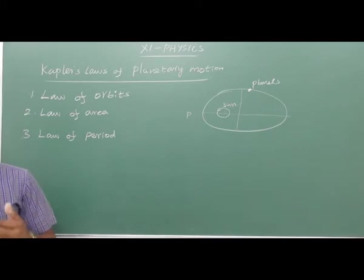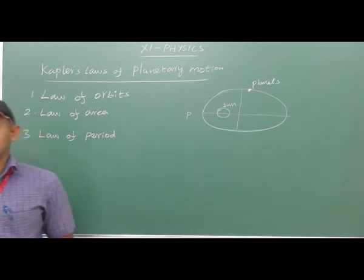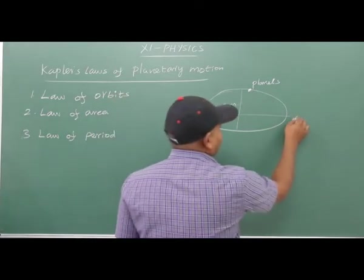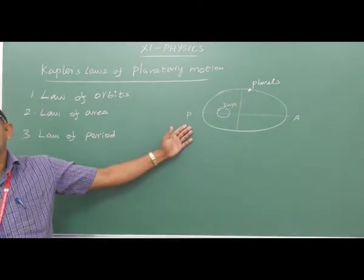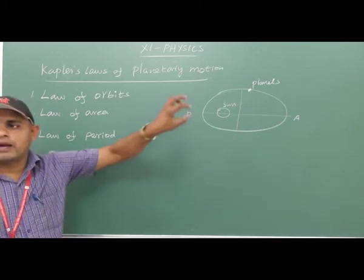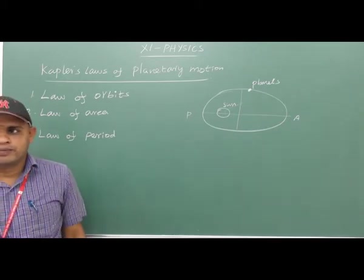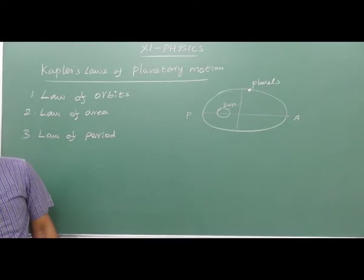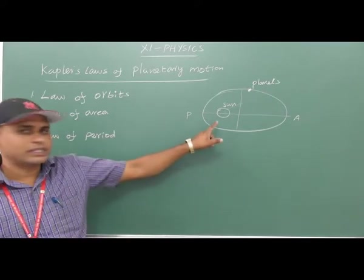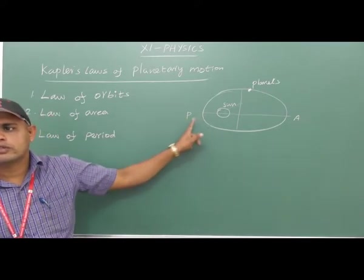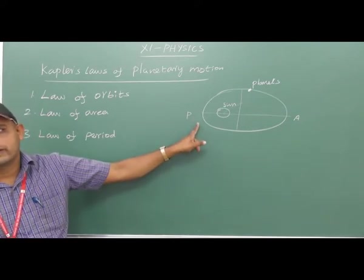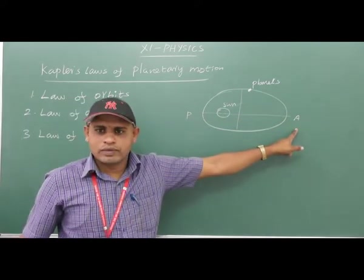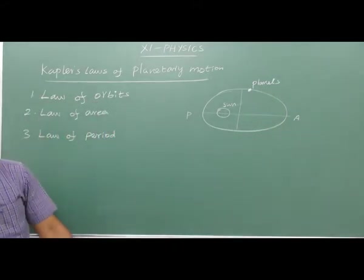The closest point is perihelion, and the opposite point — the farthest point — is called aphelion. A is called aphelion.